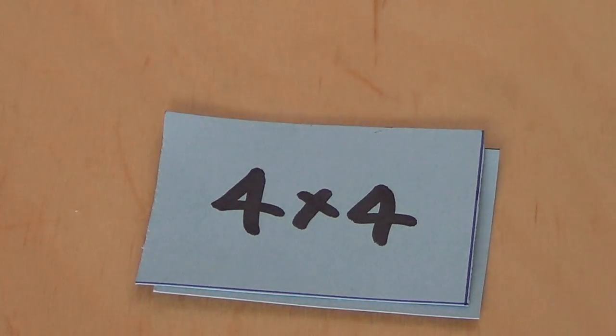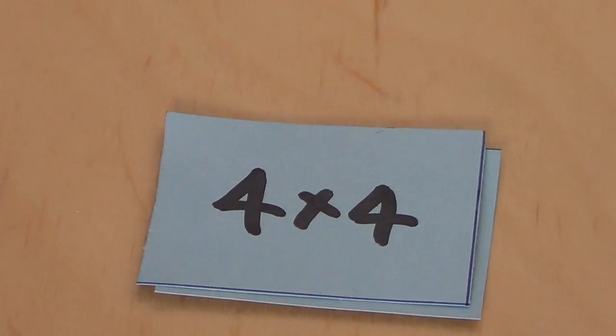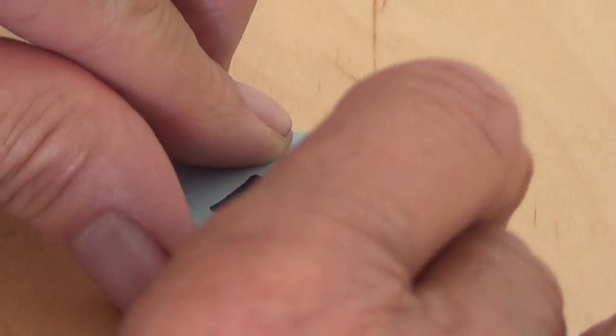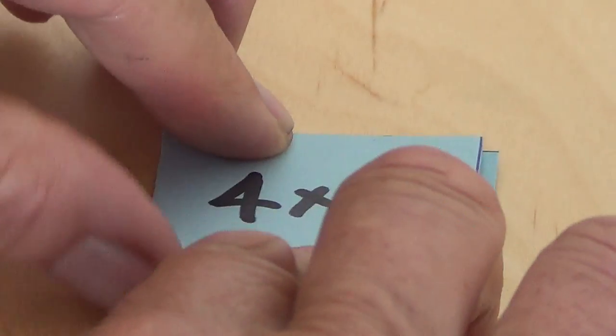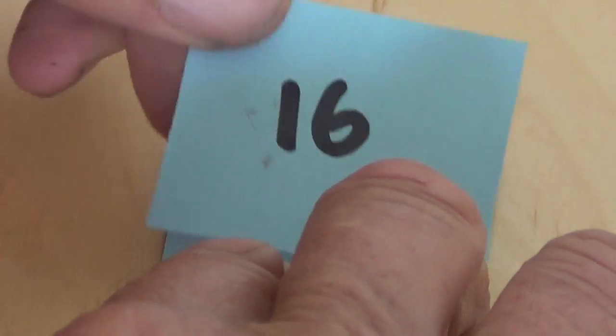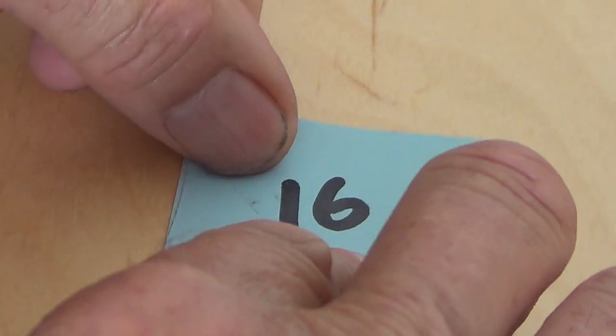Alright. Here's your flip card. You've just written 4 times 4 on your flip card. You then flip it over like this. And then you write 16 on it. Alright. And the 16 will go on upside down. Because look. There's 16 there.